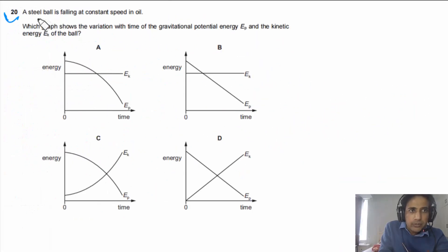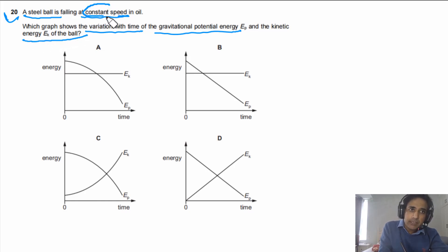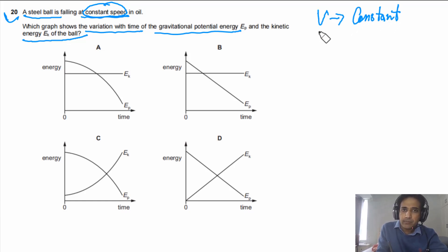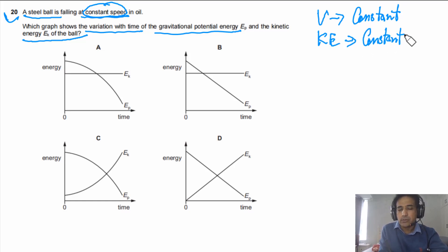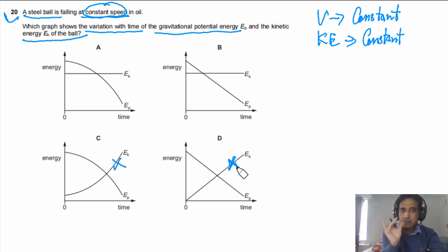Question 20: A steel ball is falling at constant speed in oil. Which graph shows the variation with time of the gravitational potential energy and kinetic energy of the ball? Since speed is constant, kinetic energy is also constant. Any graph showing kinetic energy increasing over time is not possible. This eliminates some options, narrowing the answer to either A or B.